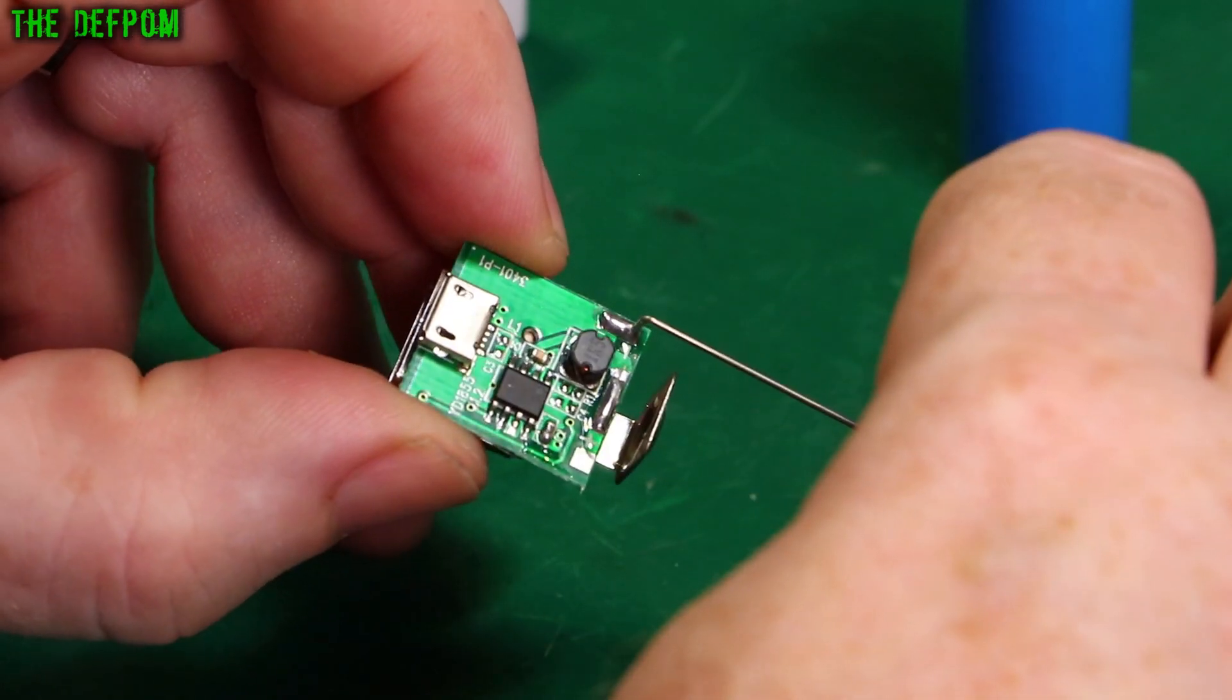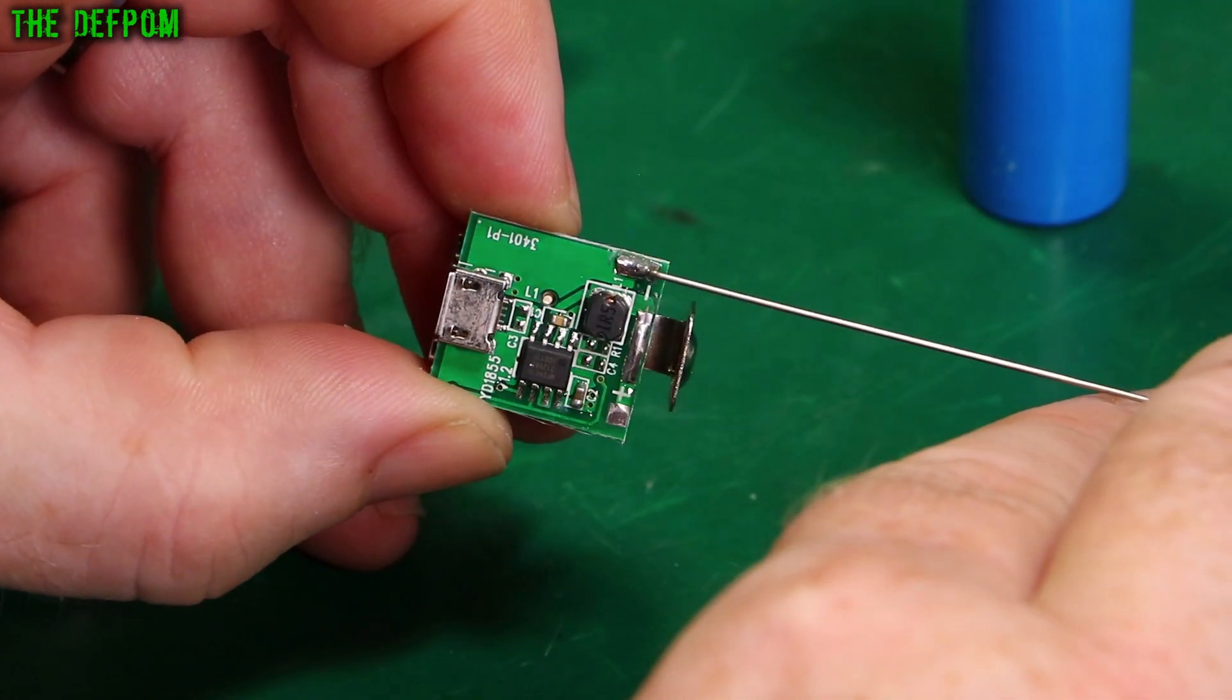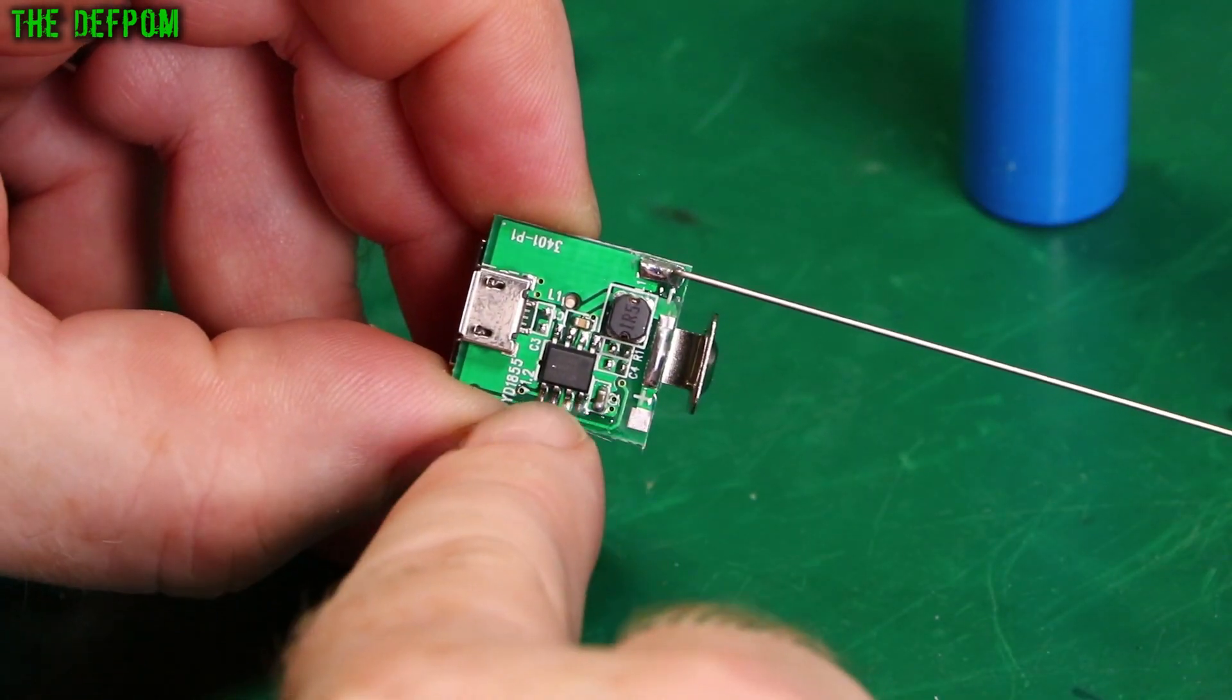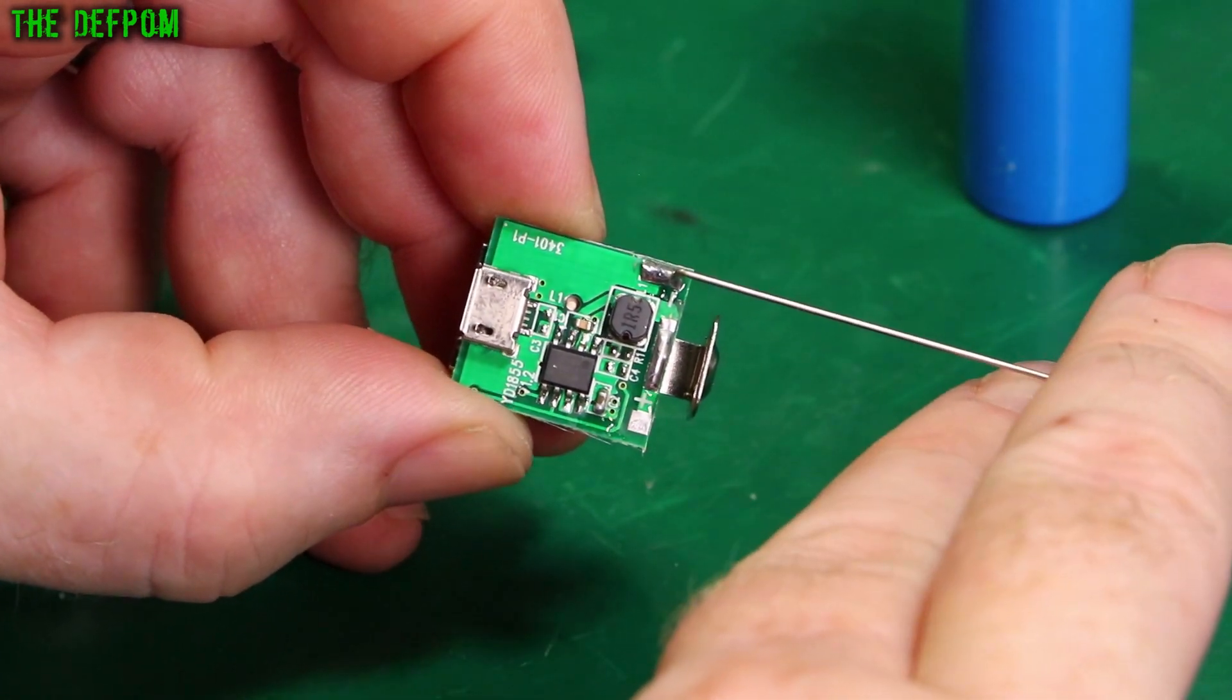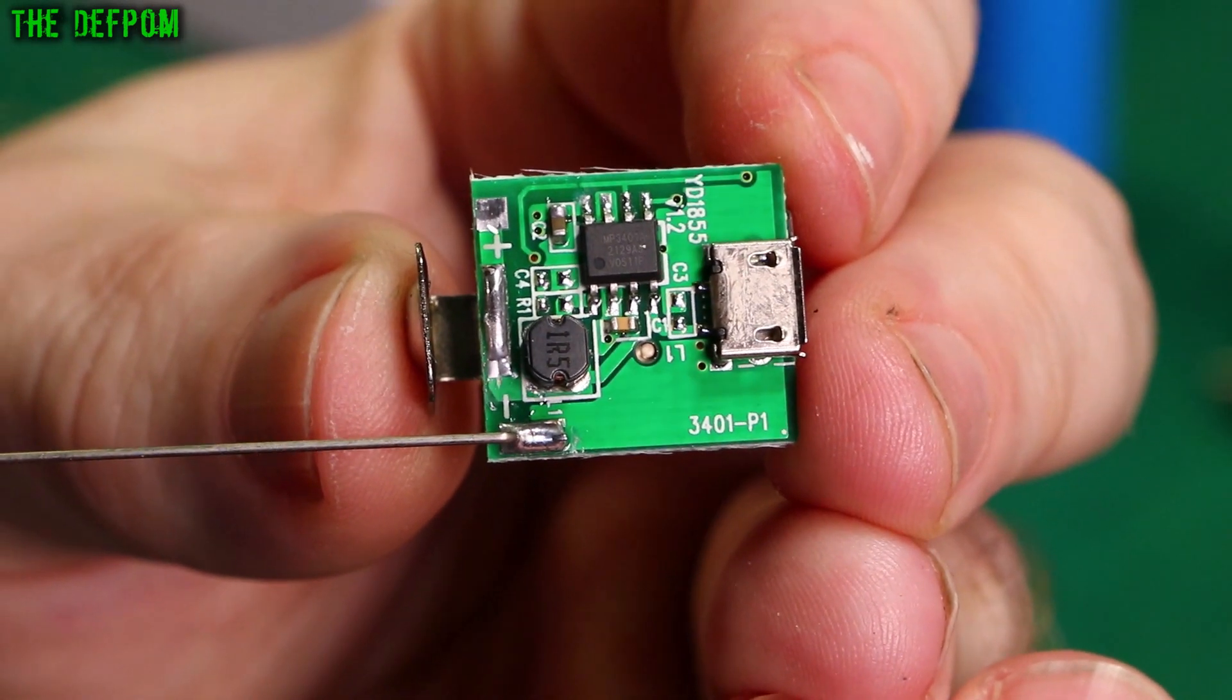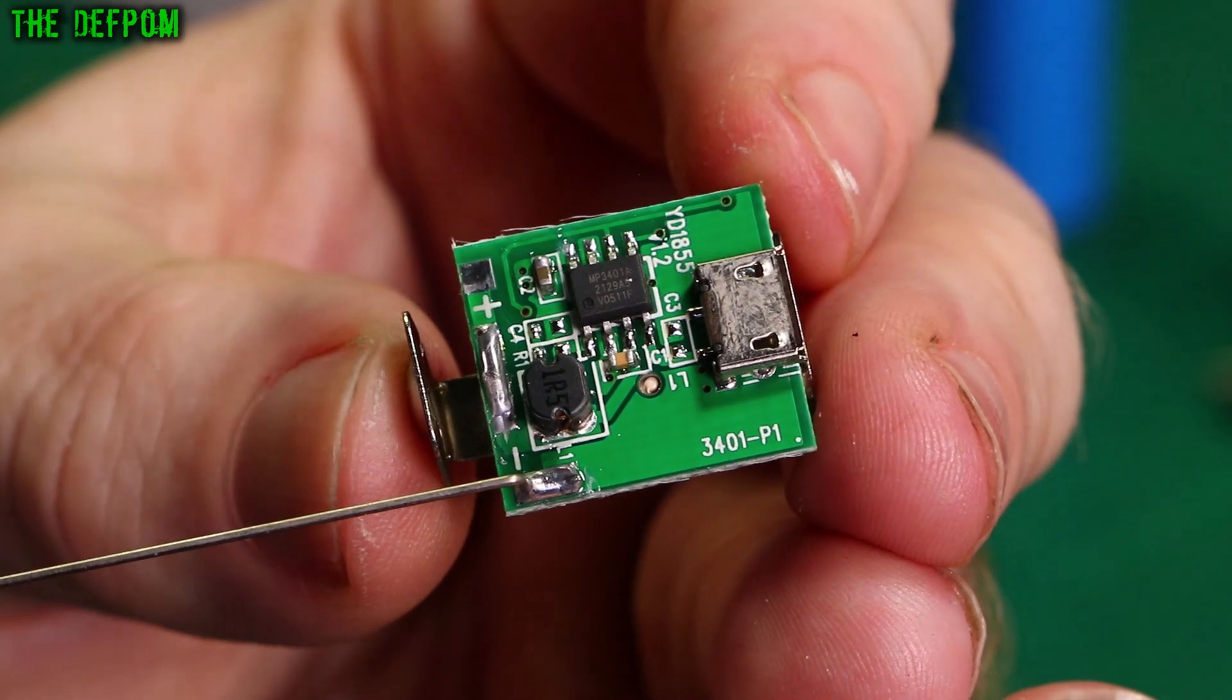On the back here you've got an inductor. So it's probably just a charge controller. I don't know, it could be a dedicated chip for doing these jobs. Mind you, right here it says YD1855 1.2, which is the board number. And this is about as close as I can get. And you can just see the chip number there, get the light on it right, there we are.